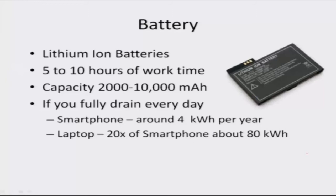The battery is a very important parameter of the phone. Normally it gives about 5 to 10 hours of working time. The capacity of a battery is measured in milliampere hours, and this number is in the range of 2,000 to 10,000 milliampere hours depending on the size of the phone, whether it's a tablet, phablet, and so on. Obviously a larger battery size means the phone will last longer before the next charge.